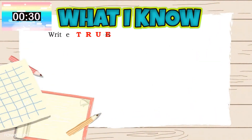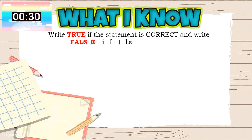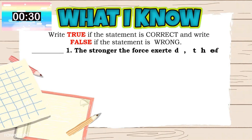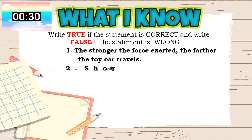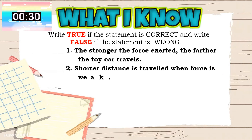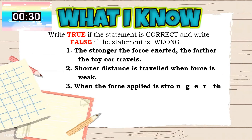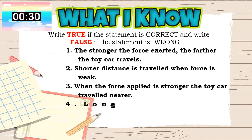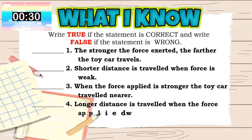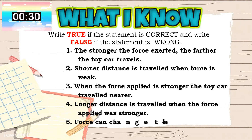Write true if the statement is correct and write false if the statement is wrong. 1. The stronger the force exerted, the farther the toy car travels. 2. Shorter distance is traveled when force is weak. 3. When the force applied is stronger, the toy car traveled nearer. 4. Longer distance is traveled when the force applied was stronger. 5. Force can change the movement of an object.